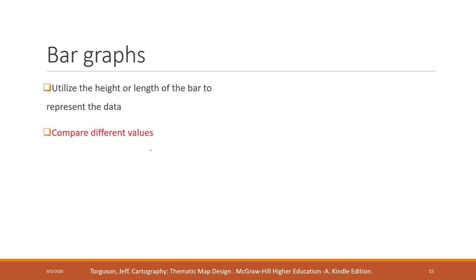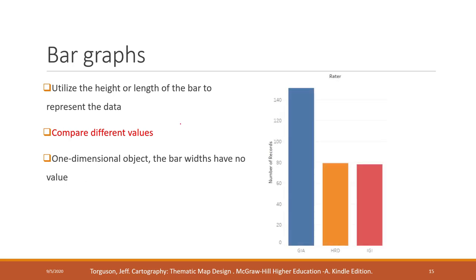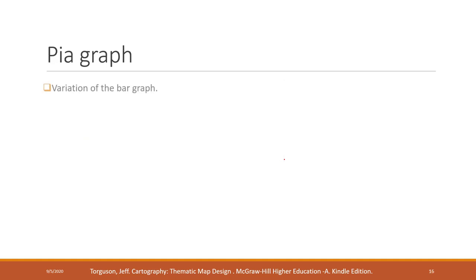A bar graph is used to compare values across different categories. Here we can see that the blue bar has the highest value, and the yellow and red bars have similar values — it is very straightforward. It is still better than just looking at numbers, because our brains interpret visual signals faster than we understand raw numbers.